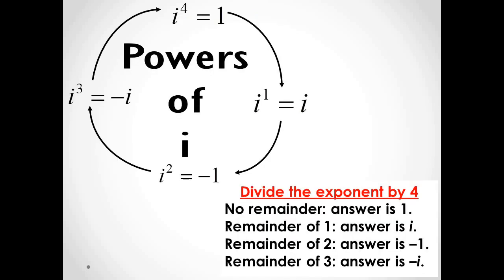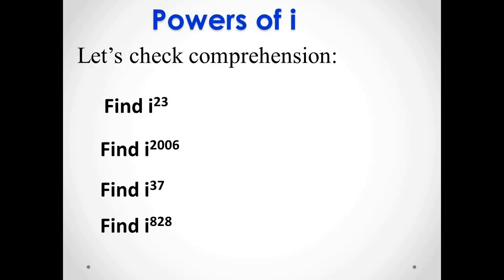Now, we see that if we divide the exponent by 4, we can say that if there is no remainder, the answer is 1. If the remainder is 1, the answer is i. If the remainder is 2, the answer is negative 1. And lastly, if the remainder is 3, the answer is negative i.